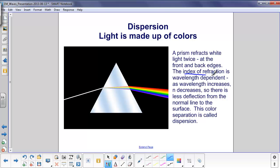Well, the index of refraction is wavelength dependent. So for different wavelengths, for example, as the wavelengths increase, N will decrease. So there's less deflection from the normal line to the surface. This color separation is called dispersion.